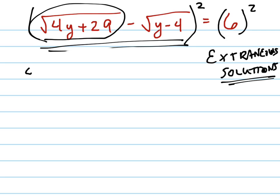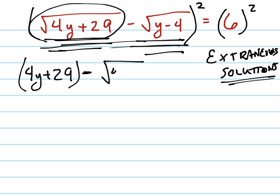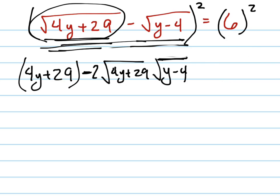So this thing is going to be squared, which is just going to give you 4y plus 29. I'll put parentheses just to kind of keep it together. This times this is going to give you negative 4y plus 29 times y minus 4, both under the square root symbol. But really there's going to be 2 of those. So negative that minus that is really negative 2 of that.